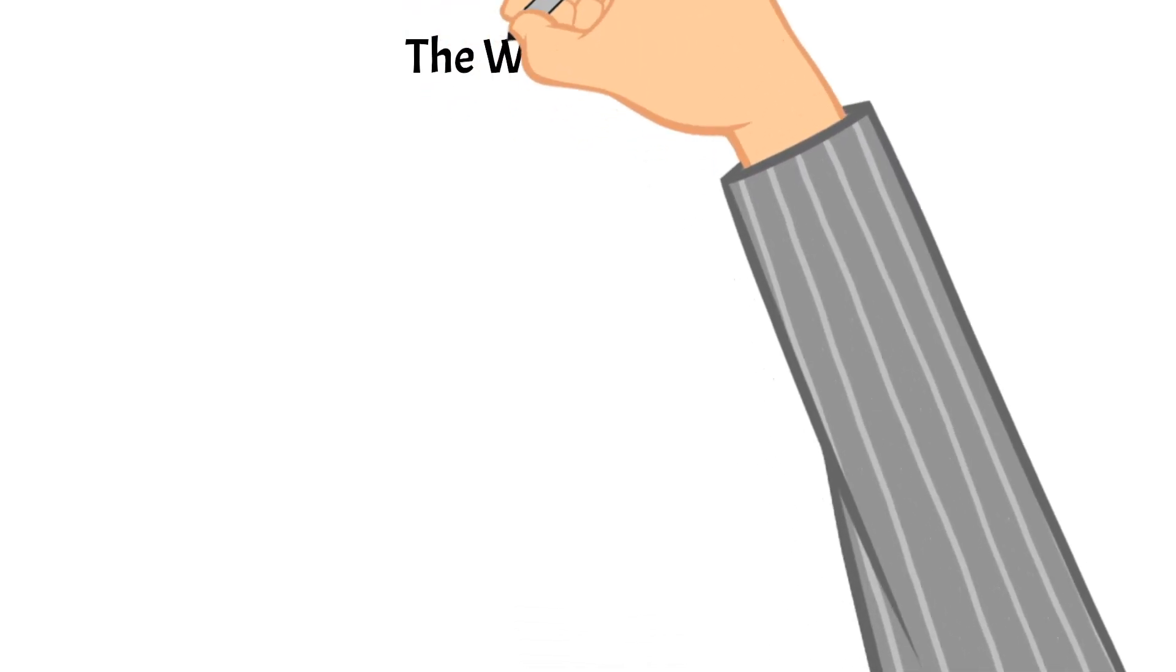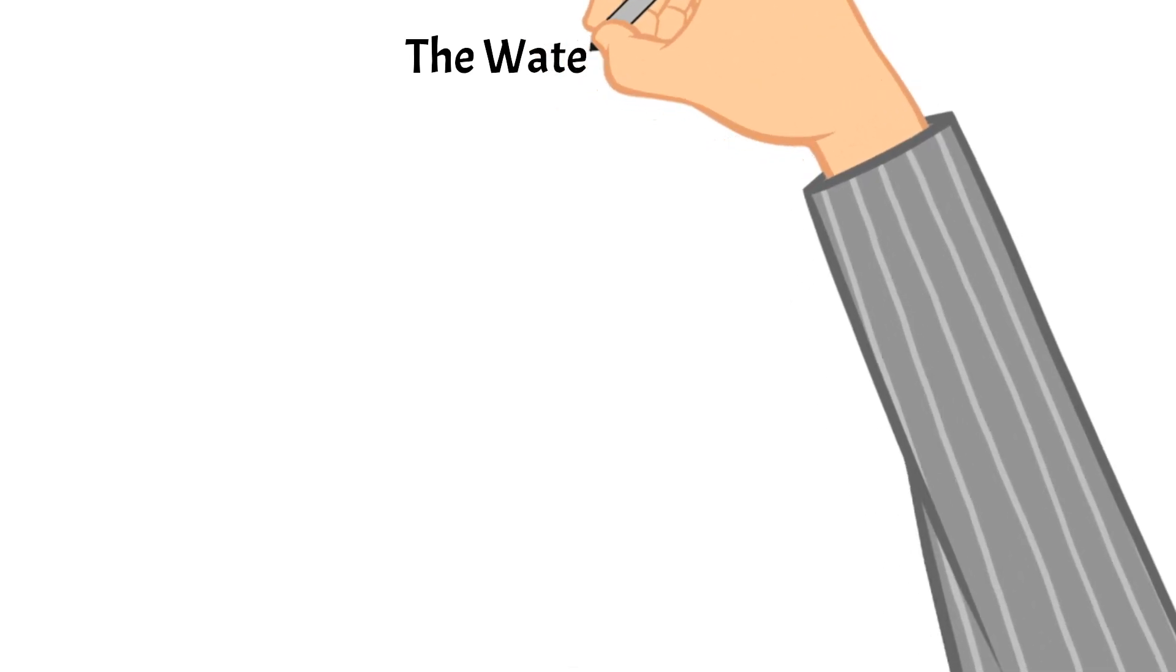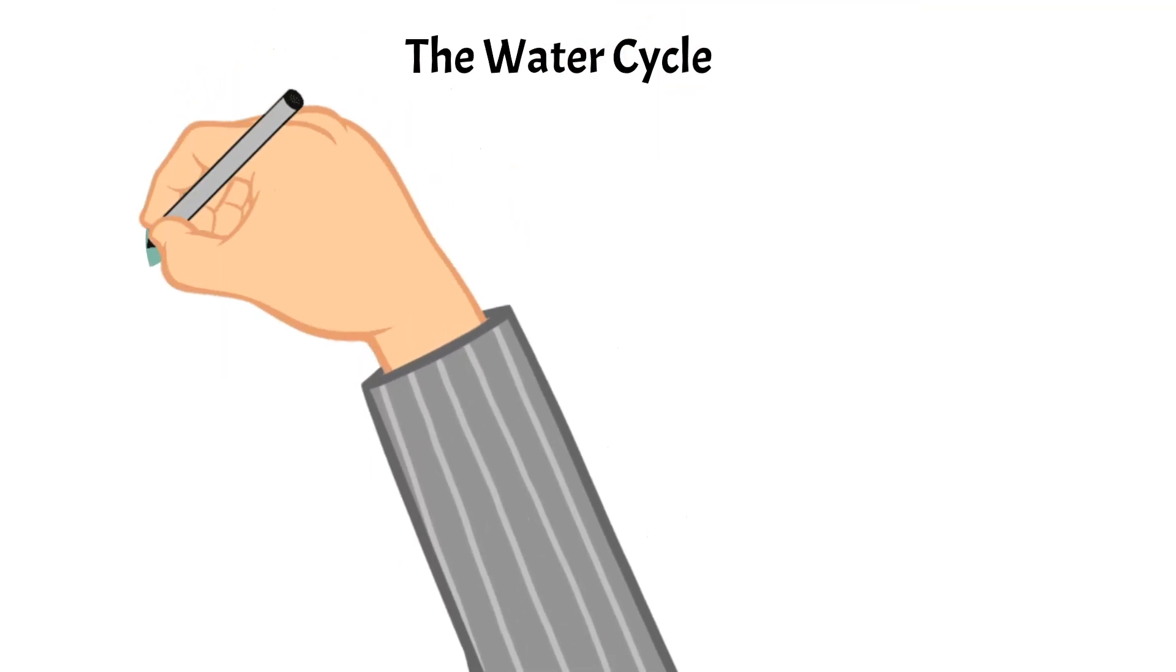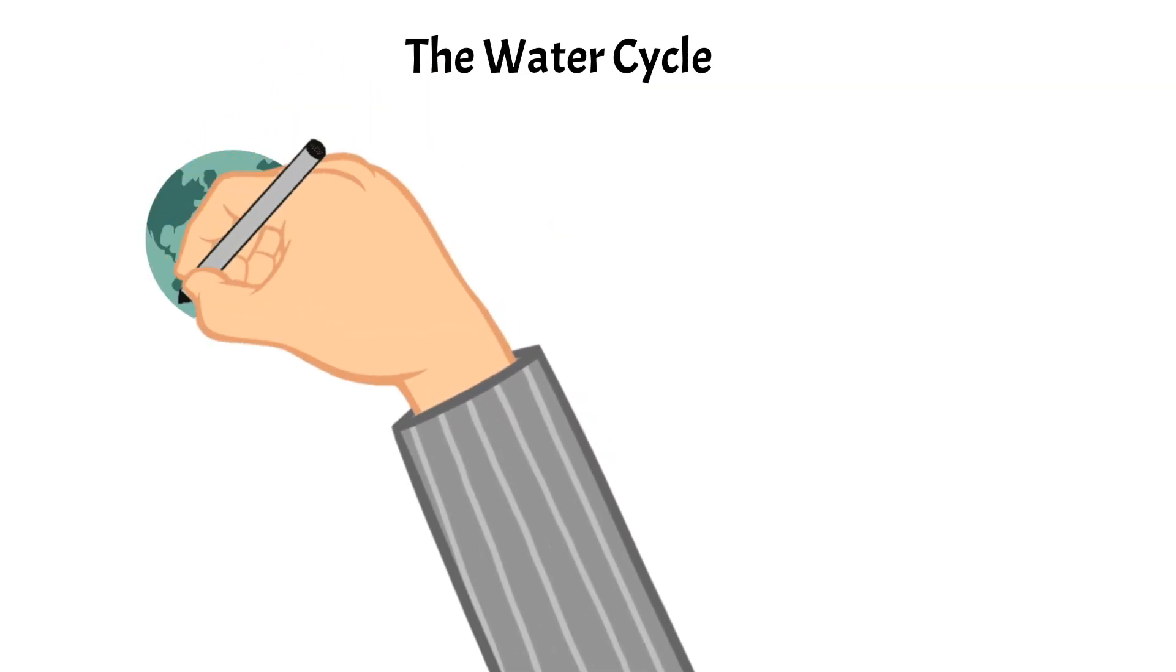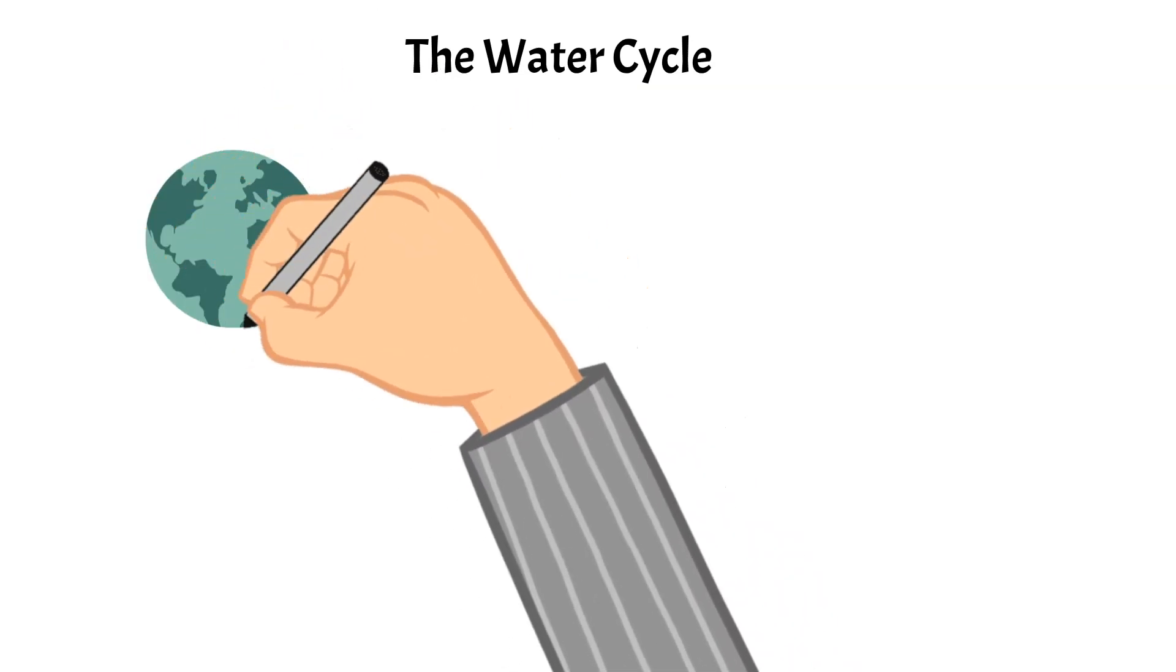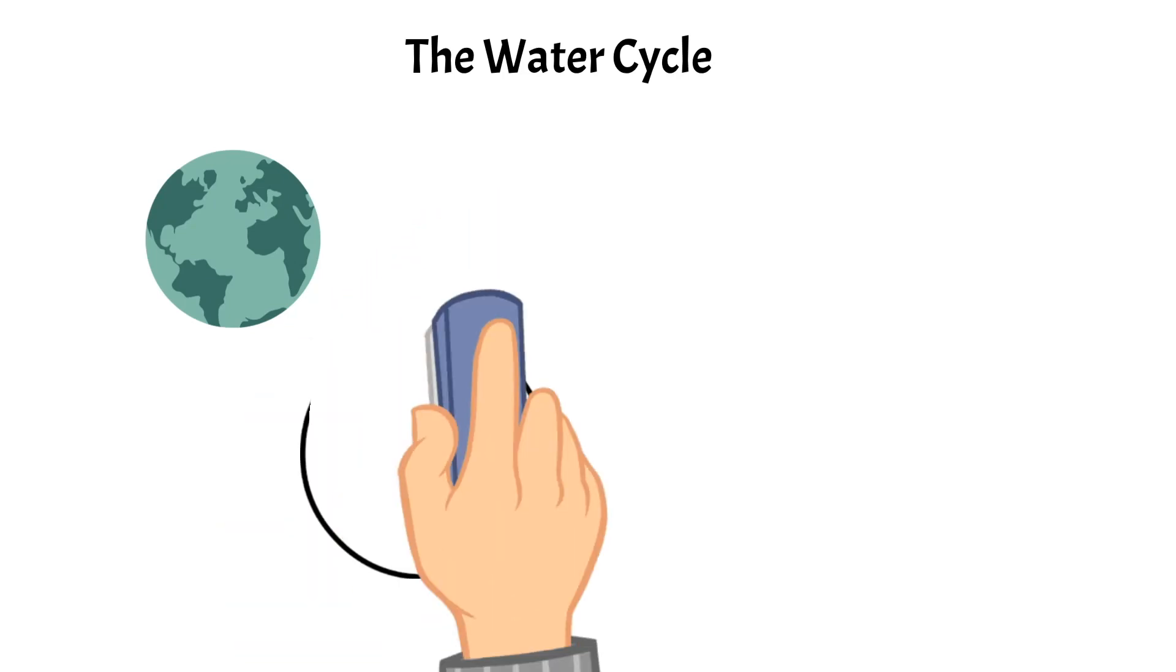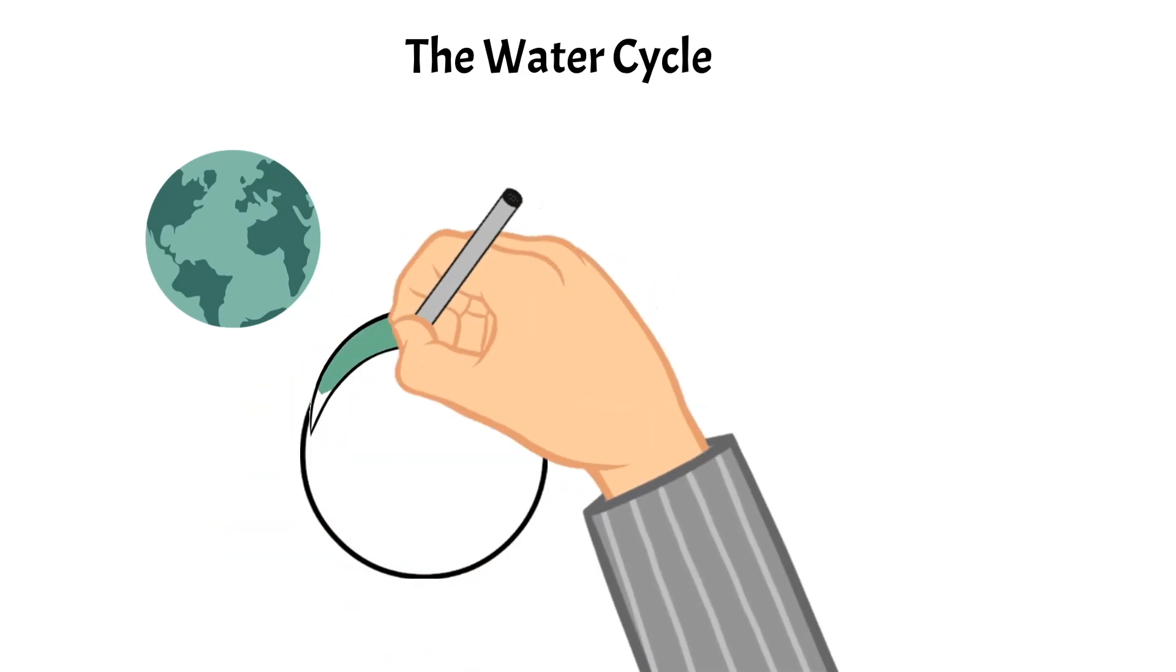The first cycle that we are going to talk about today is the water cycle. Every living thing on earth needs water, and so water is very important and it moves through a cycle.